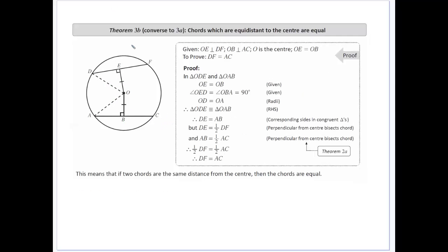So the converse of that theorem is that if those sides are equal, if that's the case, if the chords are equidistant, so the same distance there, and again that's got to happen when they are right angled, then the chords must be equal.